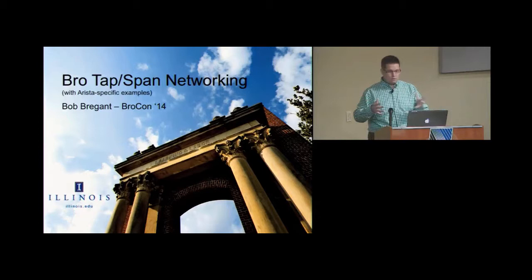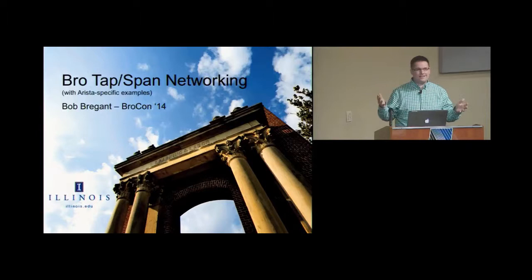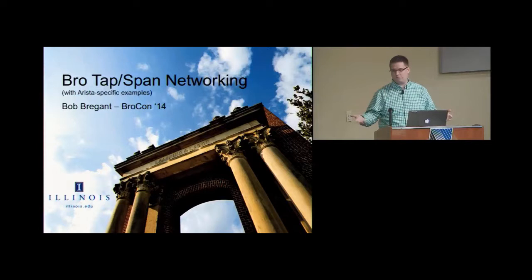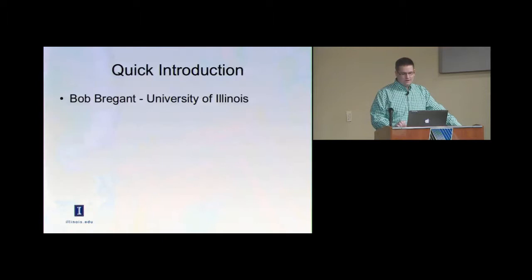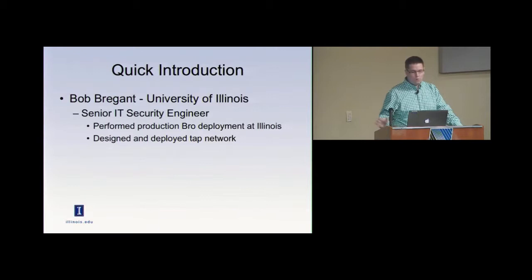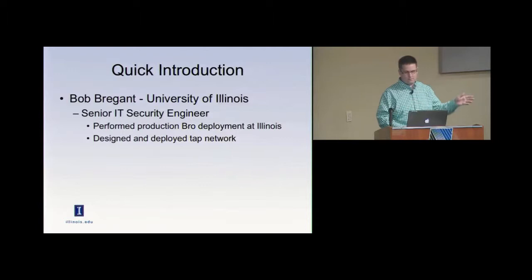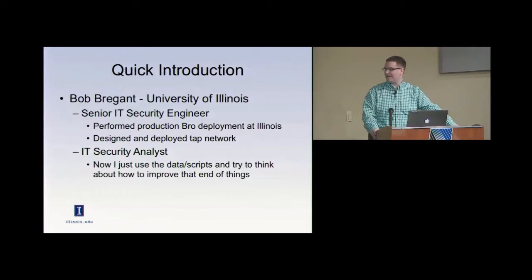I am including some very Arista-specific examples, including actual config lines, because talking about it in the generic sense is good, but if you actually see how it works — even if you're not using Arista hardware — I'm certain you can get some useful bits out of it. As I was introduced, I'm Bob Bregent from the University of Illinois. I was a senior IT security engineer, and I performed the production BRO deployment at Illinois, designed and deployed the TAP network — how we're getting our data from the TAPs back to the BRO cluster. Right now I'm technically starting off as an IT security analyst, trying to use some of that data BRO is generating to actually get things done on the IR side.